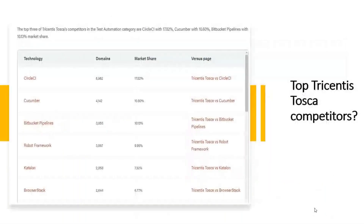Tosca does have some competitors. The top competitors include CircleCI, Cucumber, Bitbucket Pipelines, Robot Framework, Katalon, and BrowserStack — these represent the technology market trends and competition for Tosca.